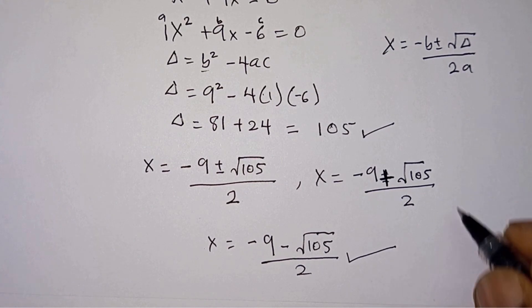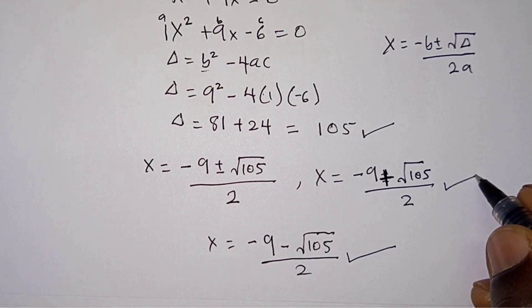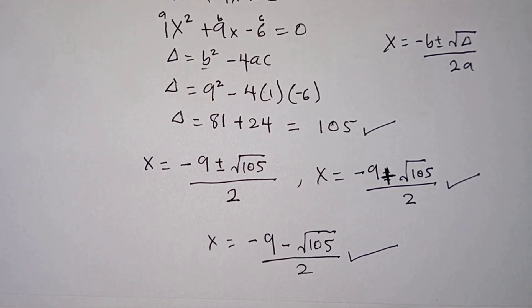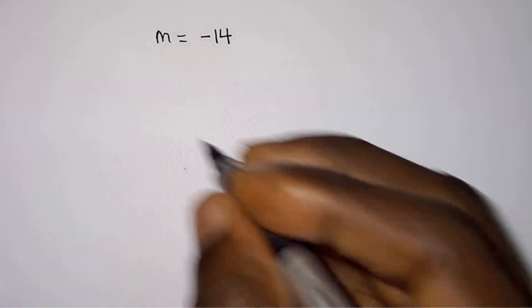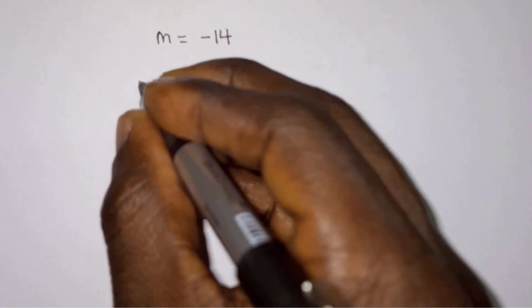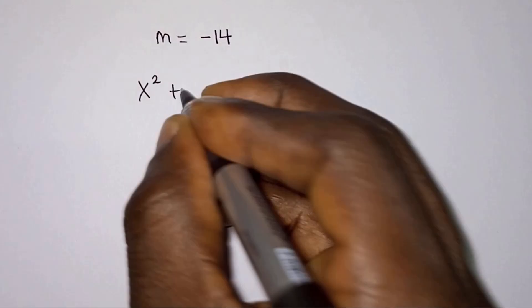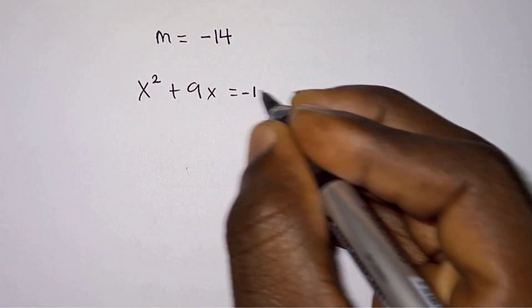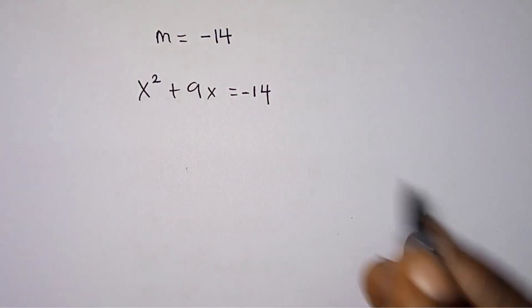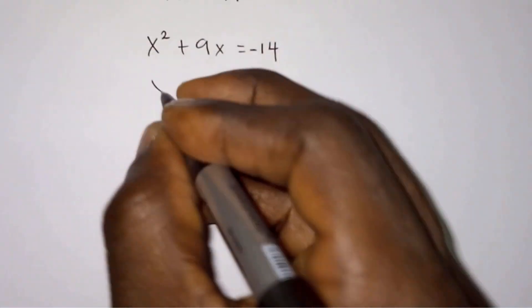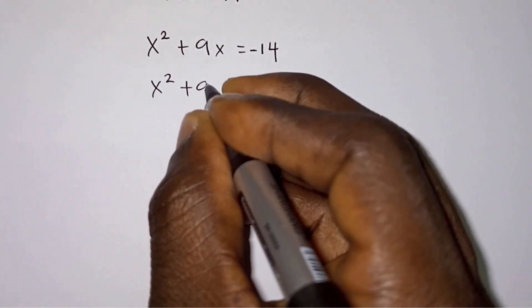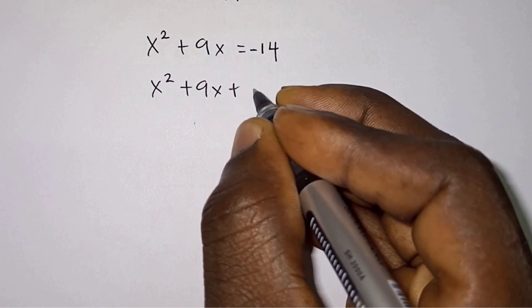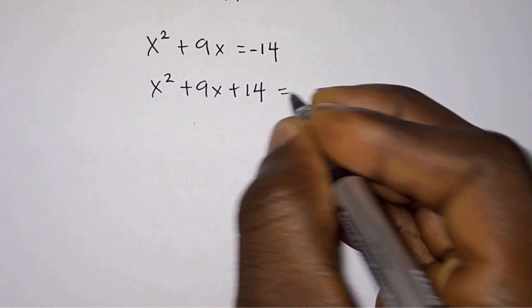These are the first two solutions to the problem and they all satisfy the equation. Now let's solve for x when m equals negative 14. When m equals negative 14, we have x squared plus 9x equals negative 14. Equating everything to zero gives x squared plus 9x plus 14 equals zero.